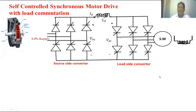We can control the speed of this motor by changing the firing angle of the source side converter. The torque developed in the synchronous motor can be controlled by changing the voltages VdS as well as VdL.